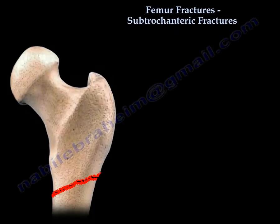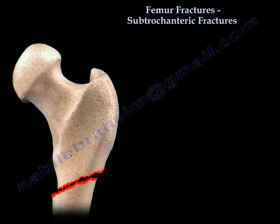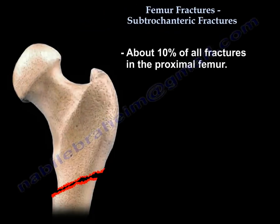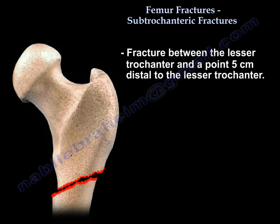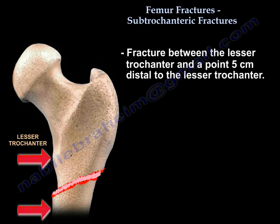Subtrochanteric fractures account for about 10% of all fractures in the proximal femur. A subtrochanteric fracture is defined as a fracture between the lesser trochanter and 0.5 cm distal to the lesser trochanter.